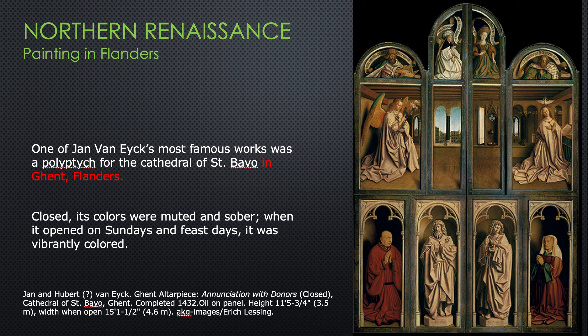This is this huge piece by Jan van Eyck and most possibly his brother Hubert as well. This is called the Ghent Altarpiece — I put it in red because I will ask you where it is; it's a quiz question. One of Jan van Eyck's most famous works was a polyptych, meaning many panels, for the Cathedral of St. Bavo in Ghent, Flanders.